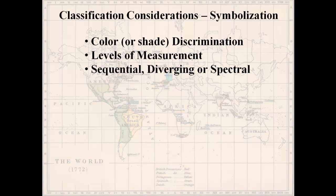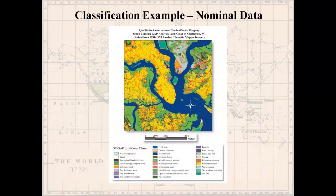For symbolization type, you can use sequential — light to dark, for example. You can use diverging, where two colors are used and the lightest shade is in the middle of your data range, with a dark version of one color at one end and a dark version of another color at the other end. And you can use spectral, which goes through all the colors of the spectrum. Here's an example from your text: a GAP analysis land cover map.